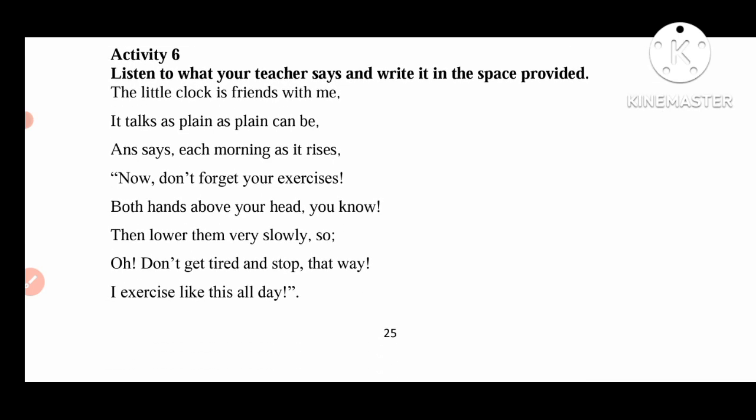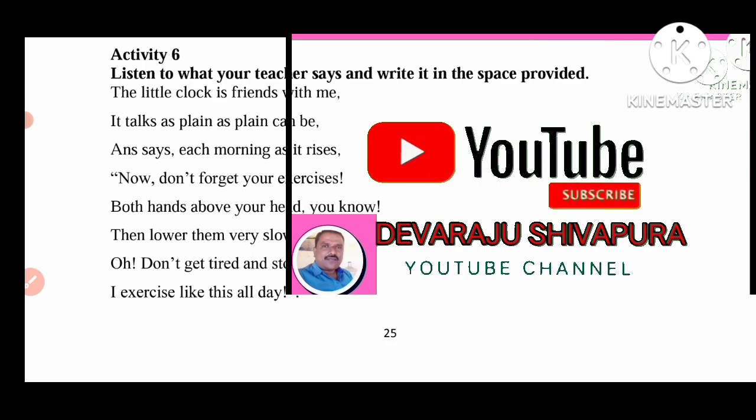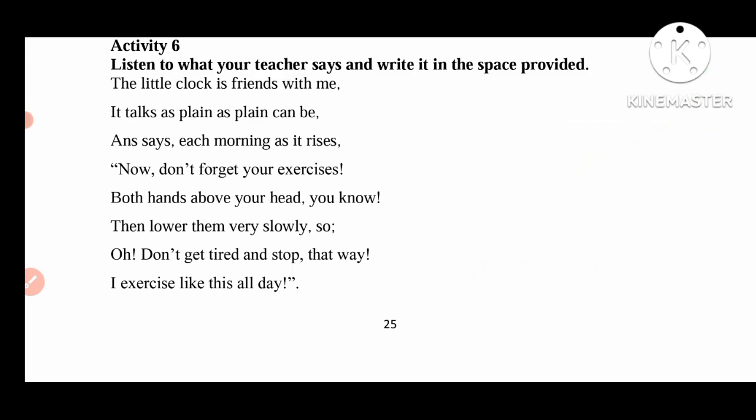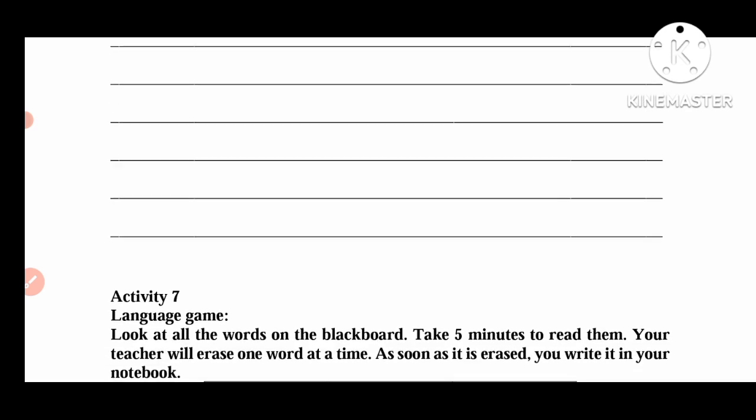Next, Activity 6: Listen to what your teacher says and write in the space provided. Here is the poem: 'The little clock is friends with me. It talks as plain as plain can be. It says each morning as it rises: now don't forget your exercises. Both hands above your head, you know, then lower, then very slowly so. Oh don't get tired and stop that way. I exercise like all the day.' We read this poem and also write it here.